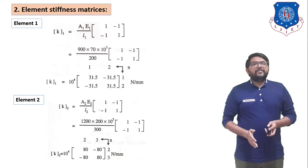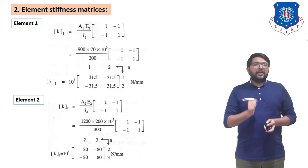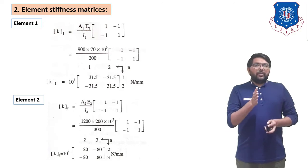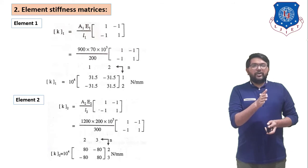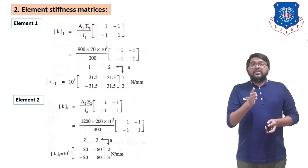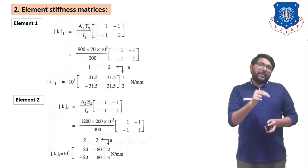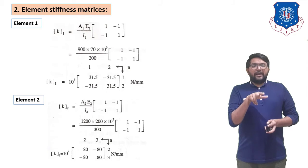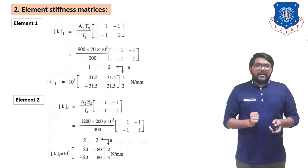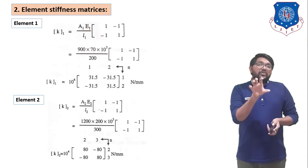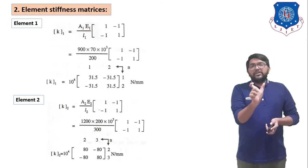For element 2, K₂ = (A₂E₂/L₂) × [1 −1; −1 1]. Substituting A₂ = 1200, E₂ = 200×10³, L₂ = 300 and taking 10⁴ as common, we get K₂ = 10⁴ × [80 −80; −80 80], with row/column indices 2 and 3.